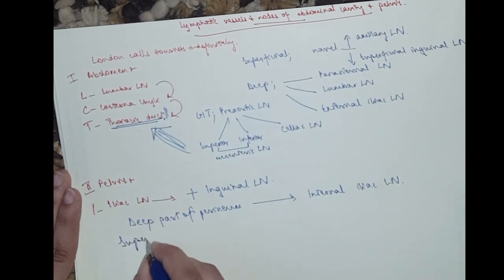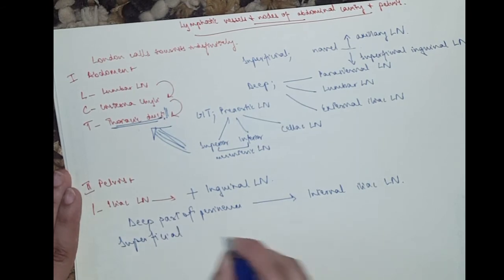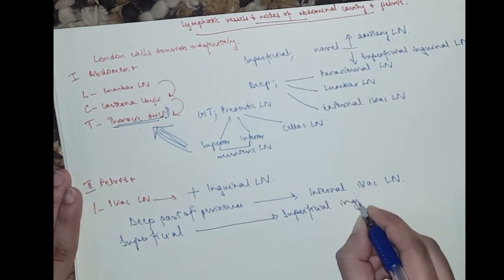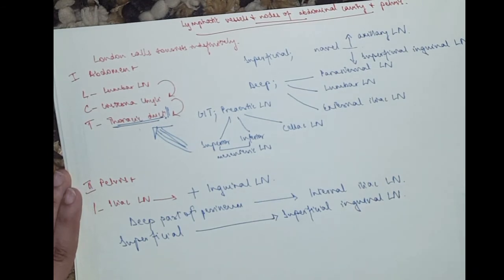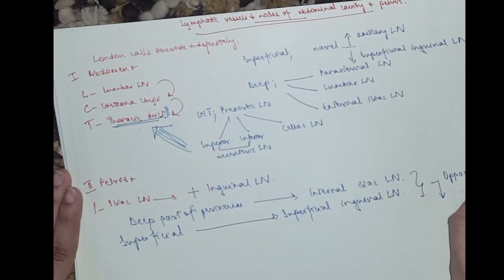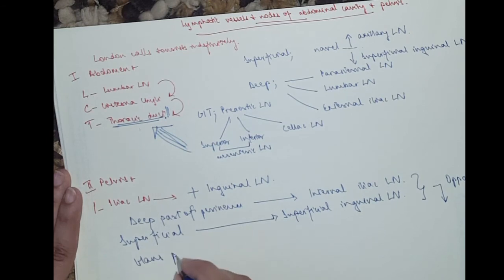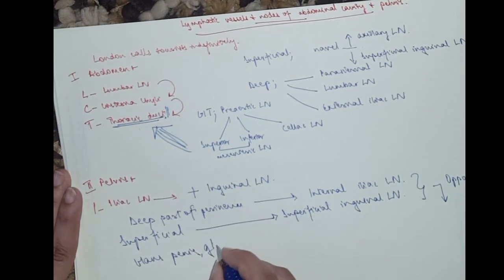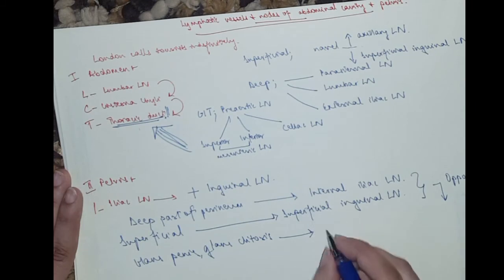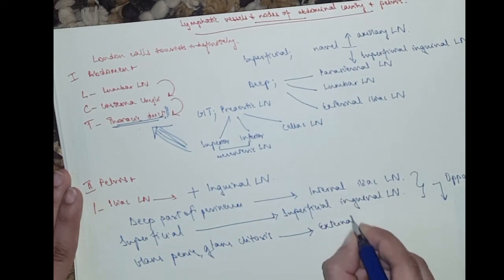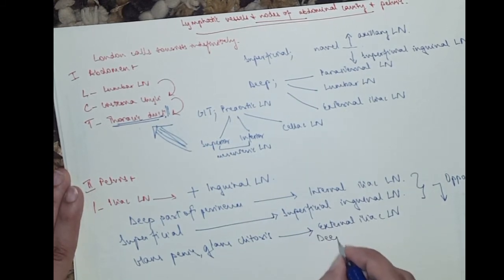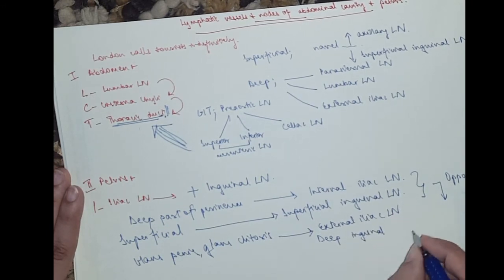The superficial tissues of the penis and the clitoris, they end in the superficial inguinal lymph nodes. And the last one, just take the complete opposite of this one. You go to the glans penis, the deeper ones, the more sensitive ones, the glans clitoris, the labia, etc. They all drain into the opposite of internal would be external iliac lymph node. And the opposite of superficial would be the deep inguinal lymph node.